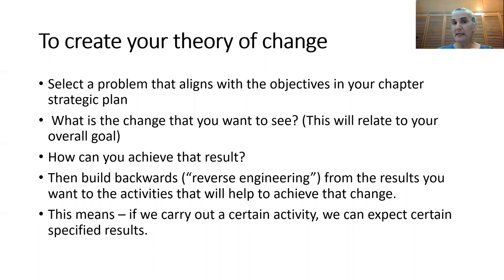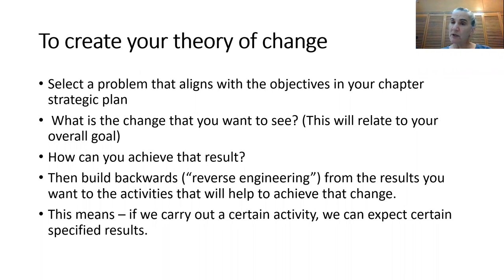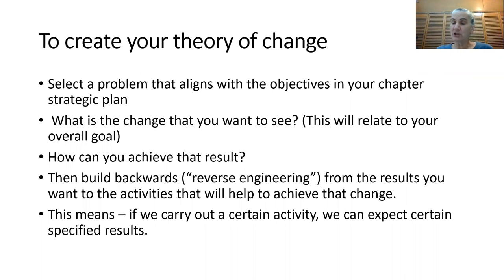So how do you go about creating your theory of change? First, you have already selected a project problem that aligns with the objectives in your chapter strategic plan, with those of a potential funder, and with your national framework for forestry outcomes. Then think about what changes you want to see in relation to that problem — this will relate to your overall goal. Then consider how you can achieve that goal by building backwards, or reverse engineering, from the results you want to see to the activities that will help make that change. This means that if we carry out a certain activity, we can expect certain specified results.